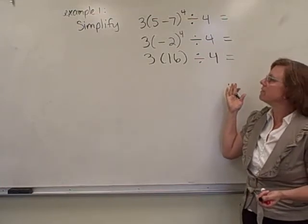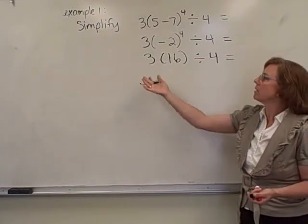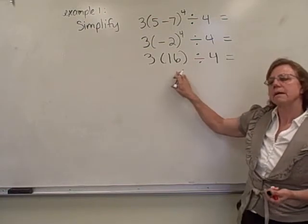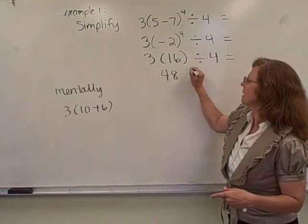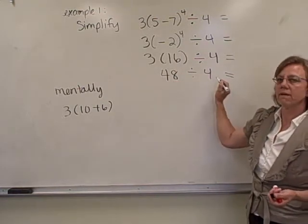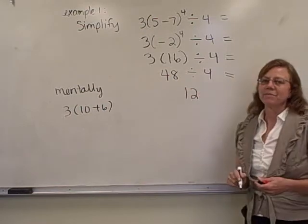So now pretty much all we have left is multiplying and dividing, so we're going to go through, multiply, divide, left to right. So we're going to have to do 3 times 16 first, 48, divided by 4, and then last thing to do, 48 divided by 4, so my result is 12.